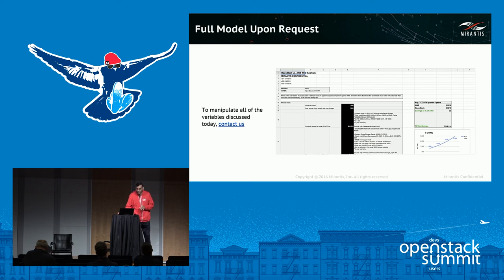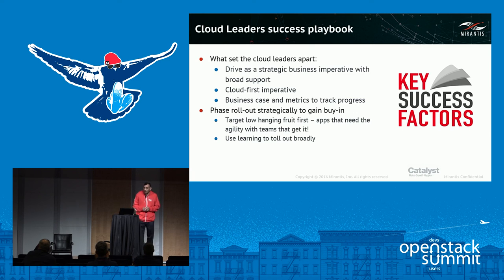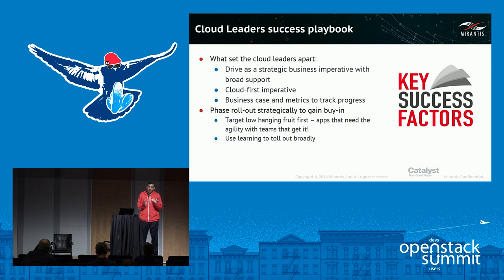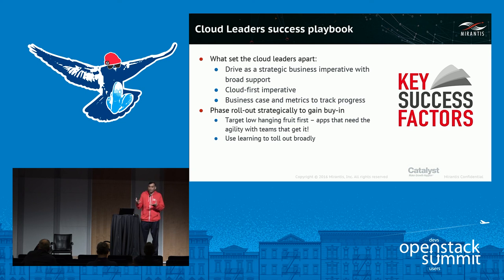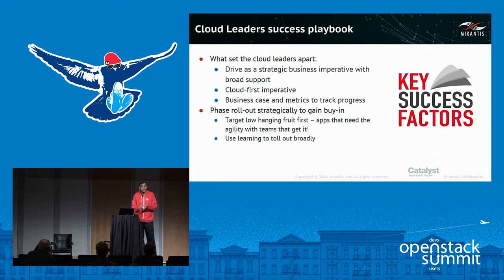How did these superusers succeed? What were the success factors? First, they considered this whole cloud initiative as a strategic business imperative with broad support. The laggards did very siloed, departmental-level implementations — that's why they died. Broad support means finance, legal, security — not just IT — because the way you consume cloud is different. Your finance team is not used to paying by the drink, so to speak. These cloud leaders started off by getting very broad support.